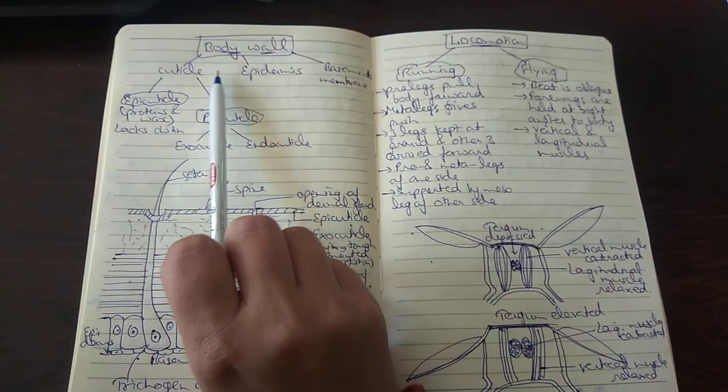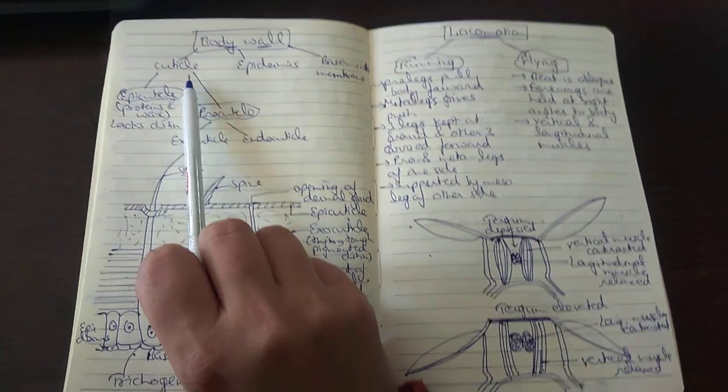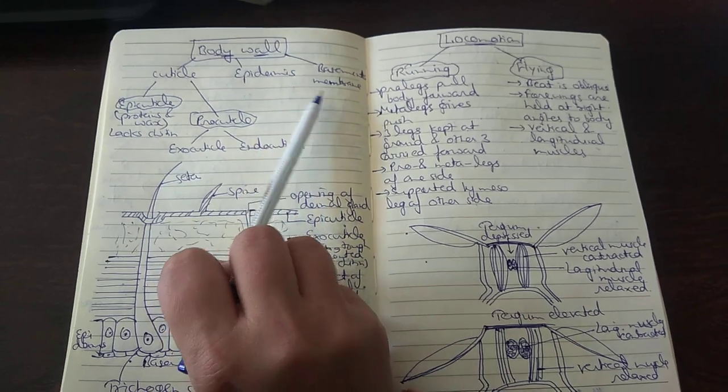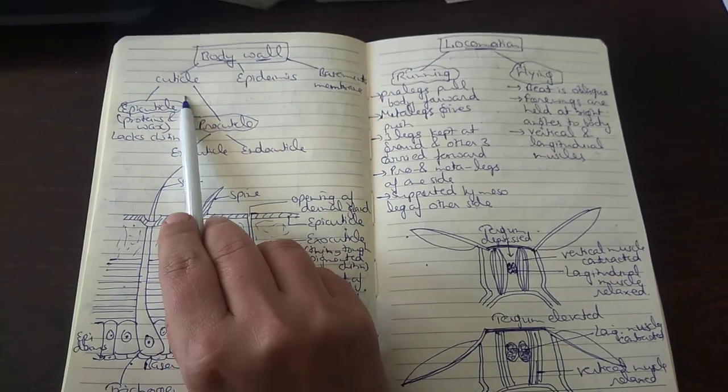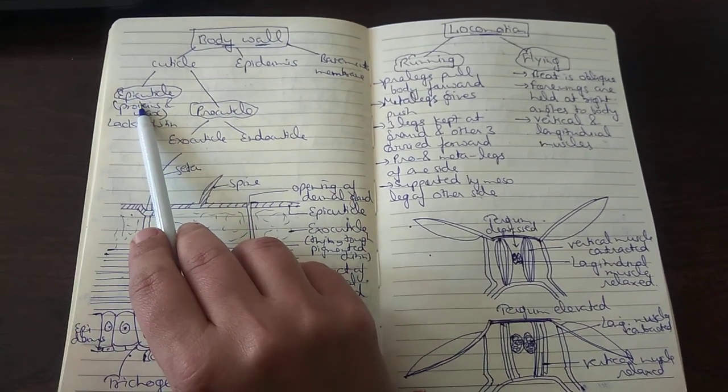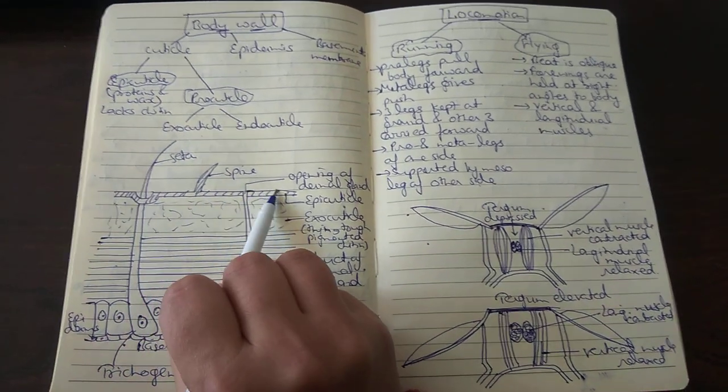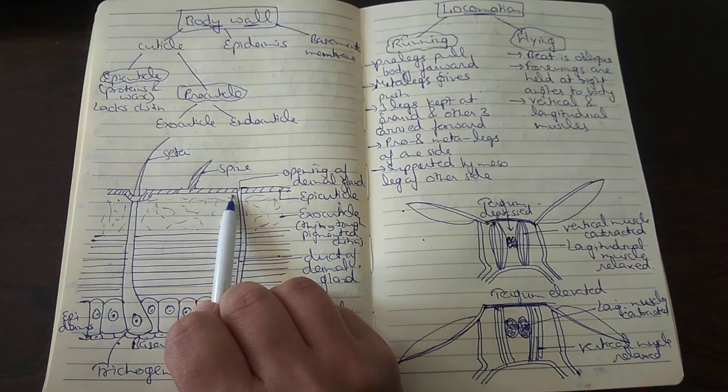The body wall consists of three components: the cuticle, the epidermis, and the basement membrane. The cuticle is composed of an external thin layer called the epicuticle, which is formed of proteins and wax and lacks the chitin layer.